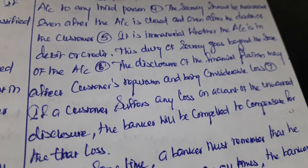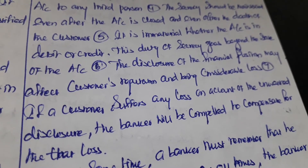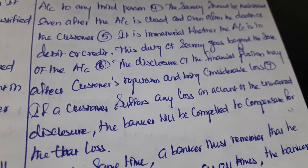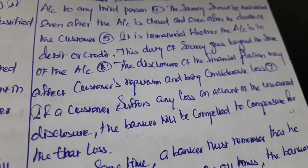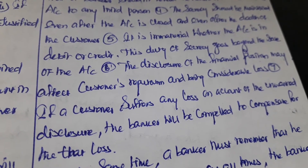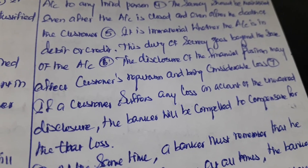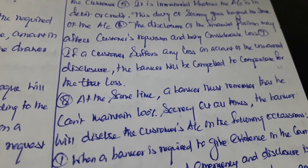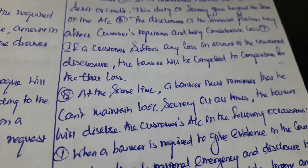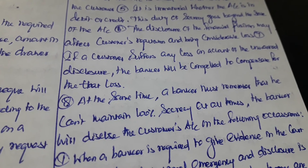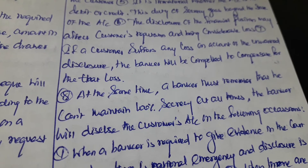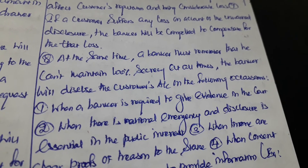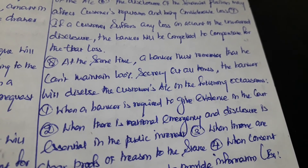The disclosure of the financial position may affect the customer's reputation and bring considerable loss. If a customer suffers any loss on account of unwanted disclosure, the banker will be compelled to compensate for that loss. If a customer is affected by that loss, he will approach the court to get a penalty from the banker. At the same time, a banker must remember that he cannot maintain 100% secrecy at all times.